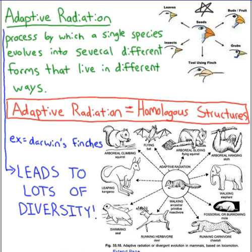The next is adaptive radiation. This is a process of macroevolution by which a single species evolves into many different forms. If you look at Darwin's finches, this is the best example — originally there was one type of finch that got to the Galapagos, genetic mutations happened, and natural selection chose which beaks were going to be successful on which islands. So one finch adapted into many different forms.